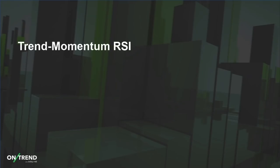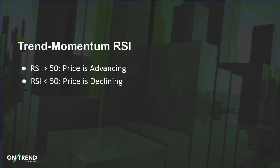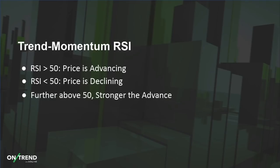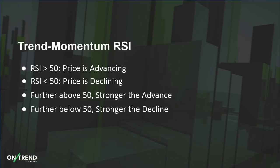So RSI, when you break it down, is clearly an indicator that can tell you the direction of the trend. The cup is half full when RSI is above 50 — prices are generally moving higher. The cup is half empty when RSI is below 50 — prices are moving lower. The further above 50 RSI is, the stronger the upward price action and momentum. The further below 50, the stronger the decline.